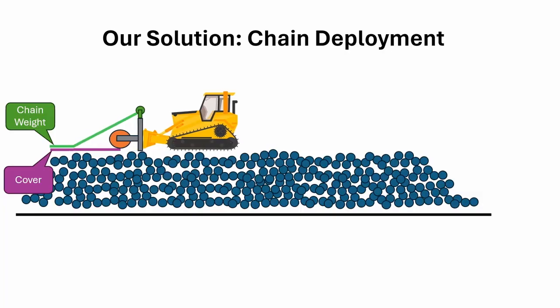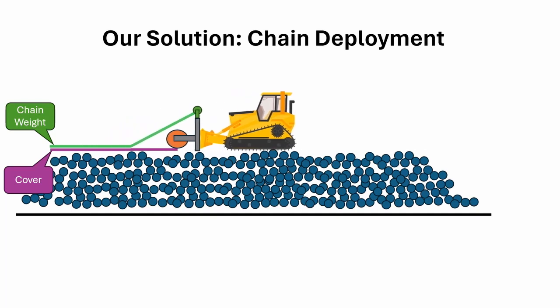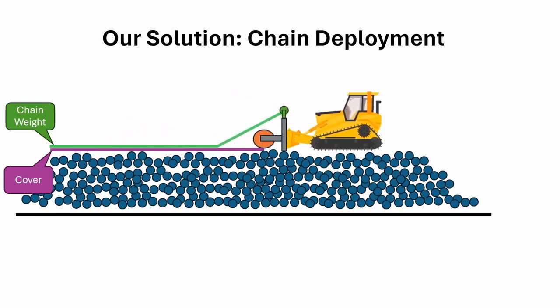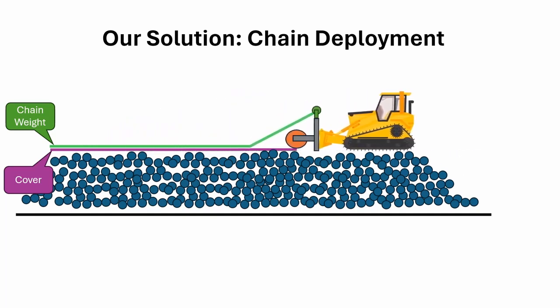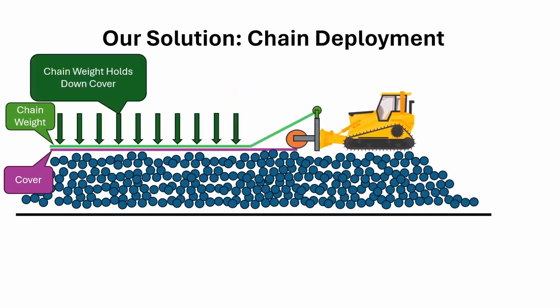Our project was to create a mechanized process of holding down the plastic covers and preventing the wind from upending them during installation. Our solution was to build a reel that unwinds chain on top of the plastic covers, adding weight and preventing the wind from moving them.